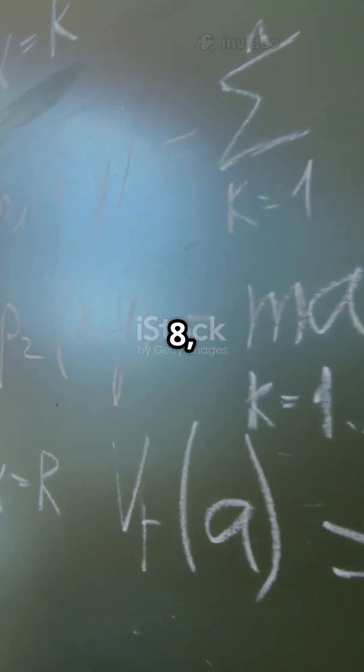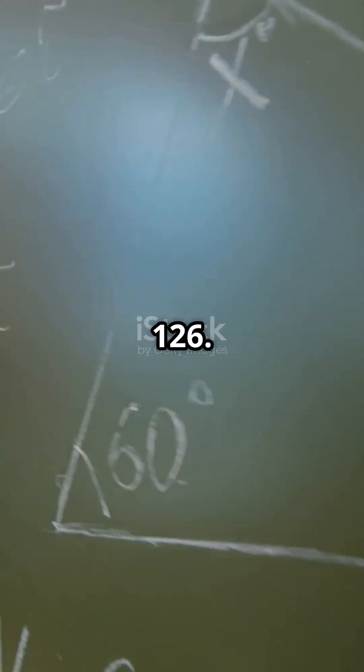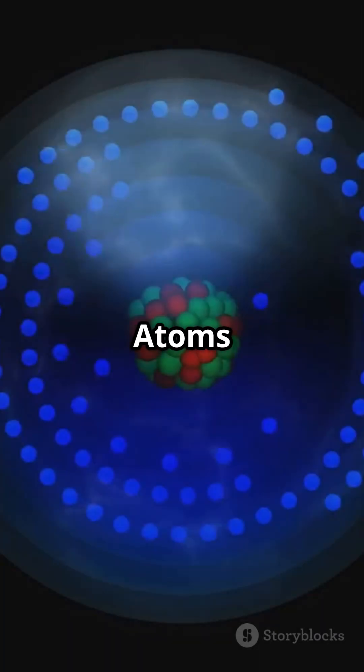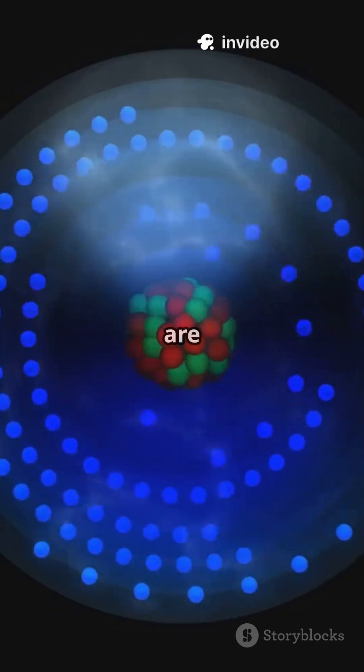These special numbers are 2, 8, 20, 28, 50, 82, and 126. Atoms with these numbers of protons or neutrons are way more stable.